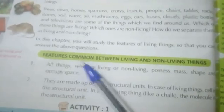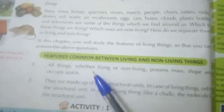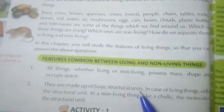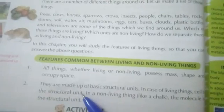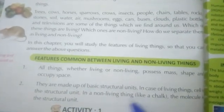To revise: the first common feature is that all living or non-living things possess mass, have a particular shape, and occupy space. The second feature is that all things are made up of a basic structural unit — in the case of living things, that unit is the cell, and in the case of non-living things, it is the molecule.